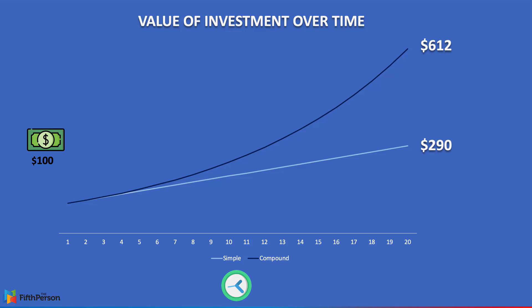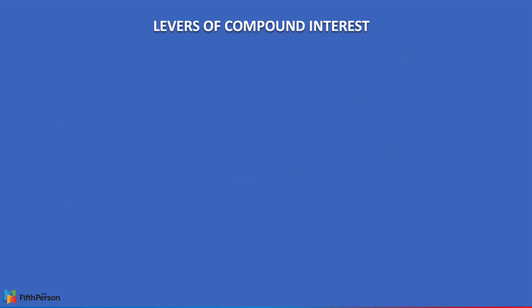When it comes to compound interest, you need to keep three things in mind — the levers you can pull when growing your wealth. First is simply capital: how much capital you have to start. The more capital you have, the more returns you have — you're starting with a bigger bucket of cash. Second is interest: how much interest you're making on your capital — the higher the interest, the more you make. And last but not least is time, which is one of the most essential components when compounding your money. In the short run the difference between simple and compound interest is not that much — $3 in our example — but over long periods of time, compound interest is able to grow your wealth exponentially.